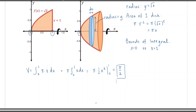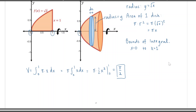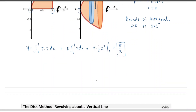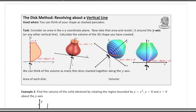That's the exact volume of that shape being created. We don't have to only rotate around the x-axis — we can rotate around different lines and get different shapes. We're now going to look at what happens when we rotate shapes around the y-axis, rotating around a vertical line instead.